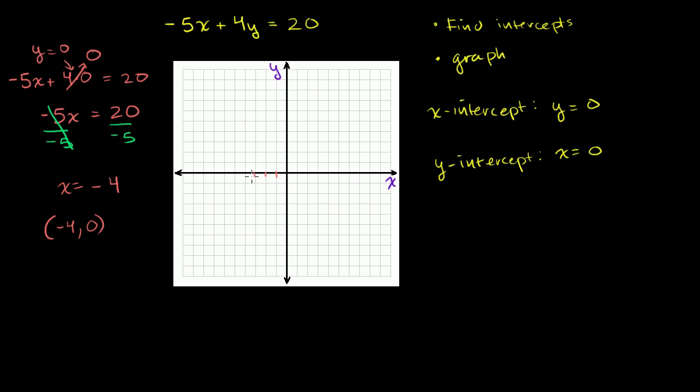So if we go 1, 2, 3, 4, that's negative 4. And then the y value is just 0, so that point is right over there, that is the x-intercept. y is 0, x is negative 4. Notice we're intersecting the x-axis.